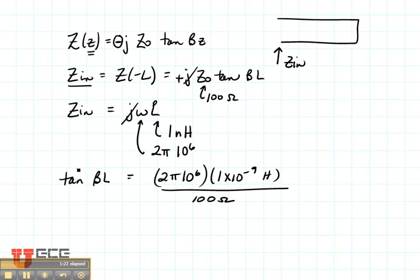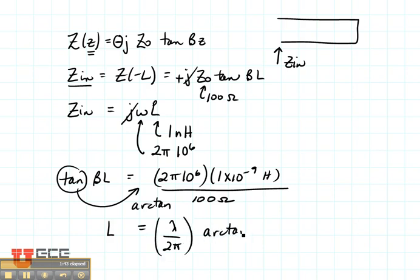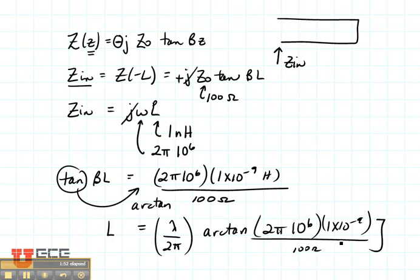So in order to solve for this, I'm just going to take the arctangent of this value. And then if I want the length, not beta L, I'm going to take, and let's suppose I want to find it in wavelengths. So I need to divide by beta, which is going to be wavelength divided by 2 pi times the arctangent of 2 pi times 10 to the 6th, 1 times 10 to the minus 9, over 100 ohms. And that would give me the length in wavelengths.